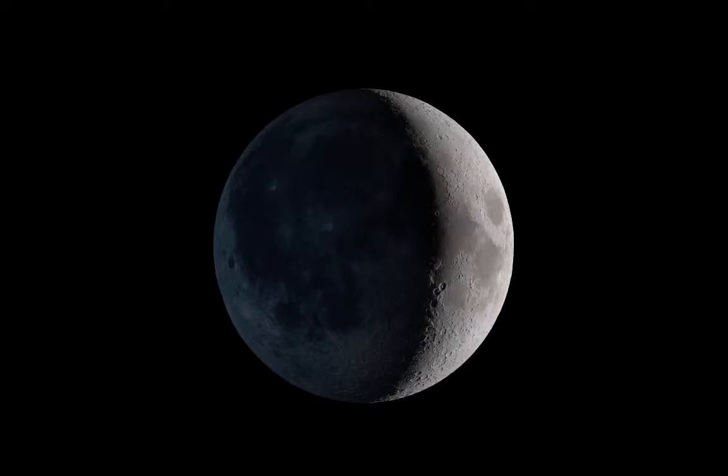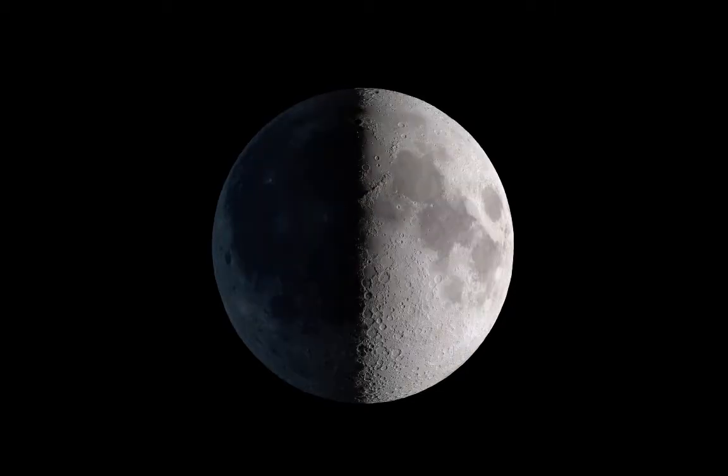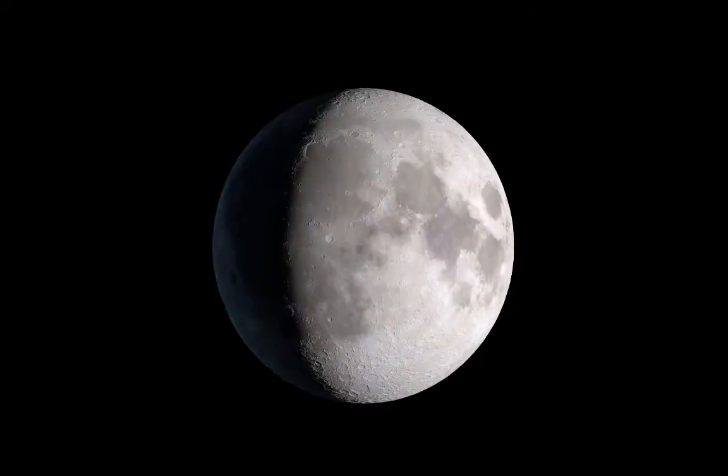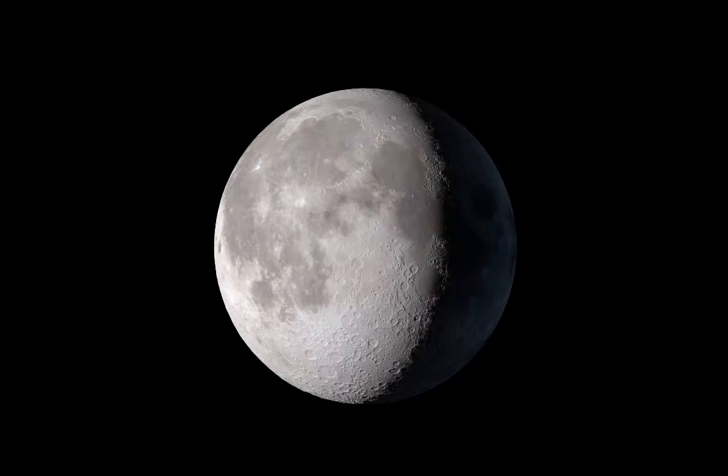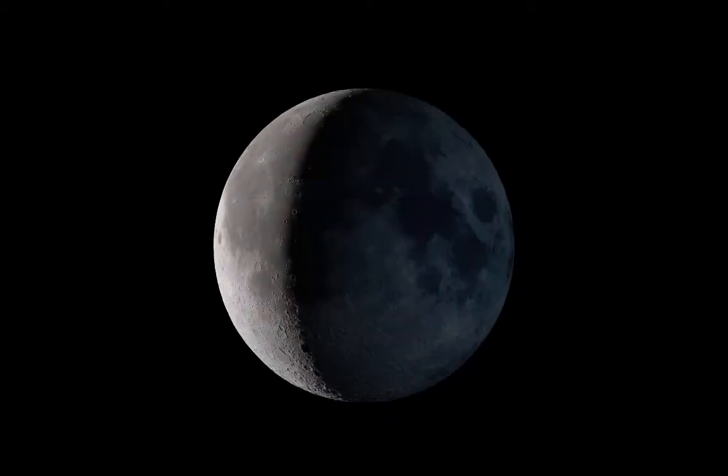When we look at the moon in the sky we don't always see it having the same shape. Sometimes it's a crescent, a quarter moon, a gibbous moon, the full moon, and then going with the waning phases, so the waning gibbous moon, last quarter, waning crescent, and then we'd be back to new moon, which is actually when we don't see it at all.